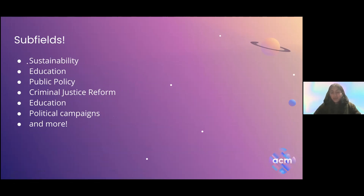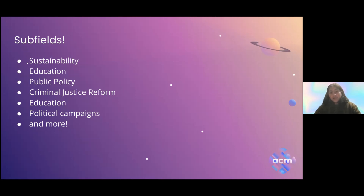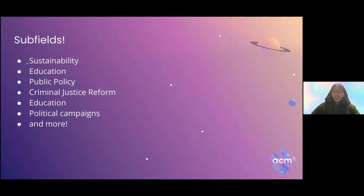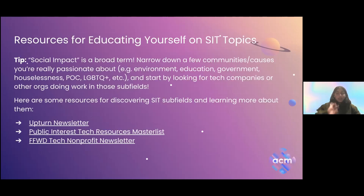The subfields of social impact tech include public policy, which is a broad term divided into many areas: sustainability and environment, clean tech, education and ed tech, criminal justice reform, and political campaigns — now that everything is tech-oriented, you can work as a software engineer on political campaigns. The Chan Zuckerberg Initiative focuses on criminal justice reform through their Justice and Opportunity Program, using tech and lobbying. Criminal justice reform is a less common but very important area.